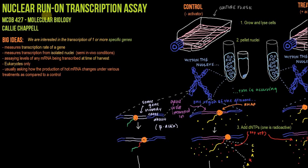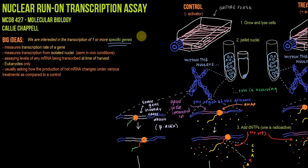The big idea with the nuclear run-on transcription assay is we're interested in measuring the level of transcription of one or more specific genes. We're not interested in transcription overall, but we have a particular question such as: what will happen to the level of transcription of gene X when I change the environment in this way? So what we do is measure the transcription rate of a gene — and not just any transcription — we're going to measure transcription from isolated nuclei.